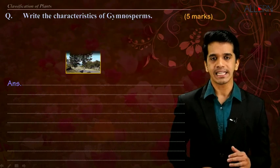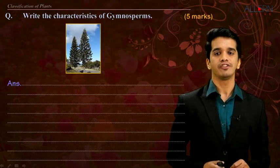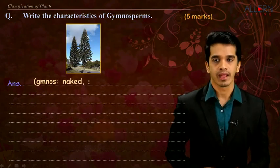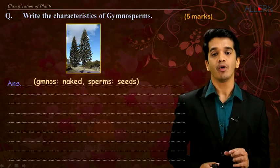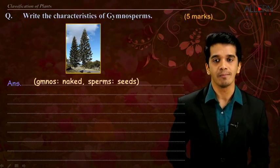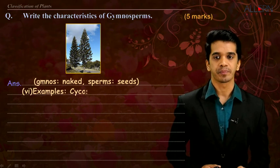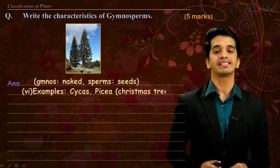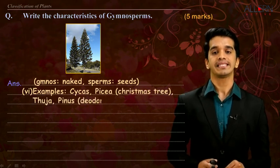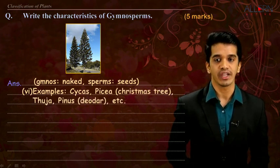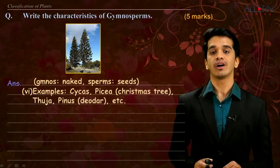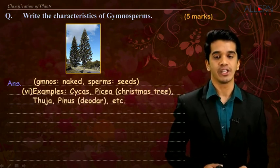Let us study the examples of gymnosperm. Gymno means naked, sperm means seeds. Examples include cycas, piscia, Christmas tree, thuja, pinus, deodar, etc.